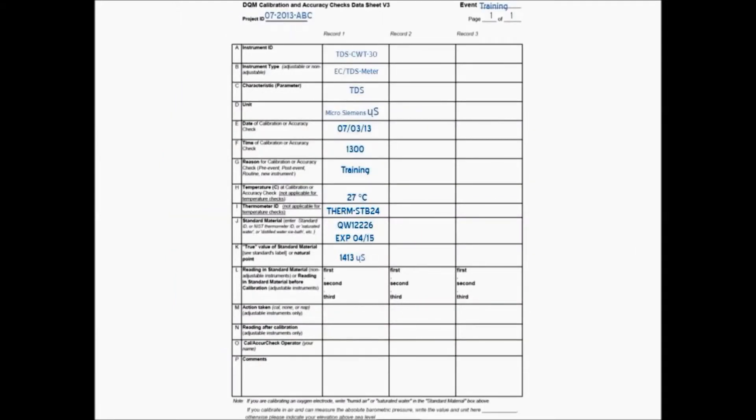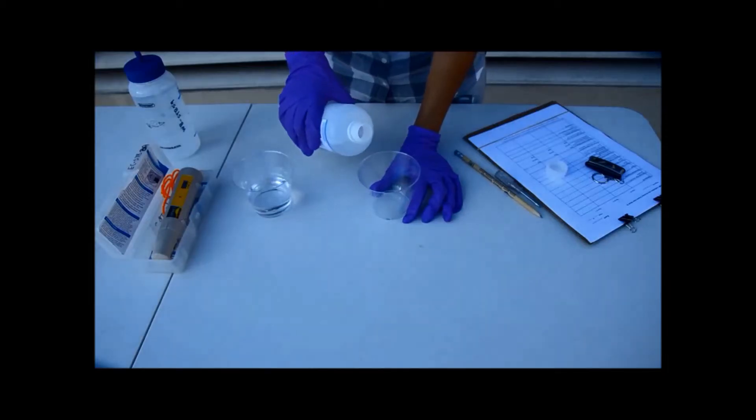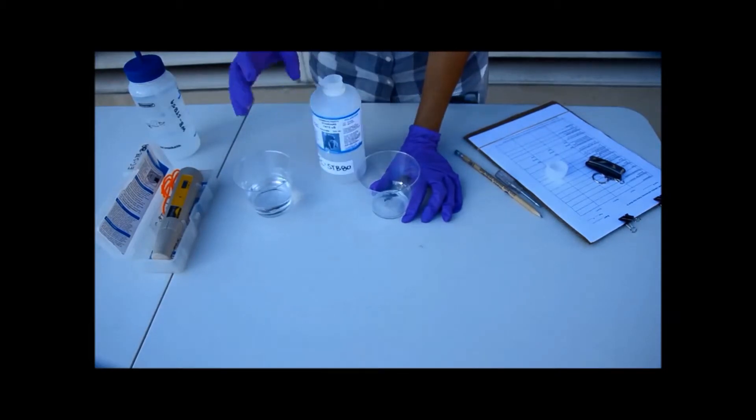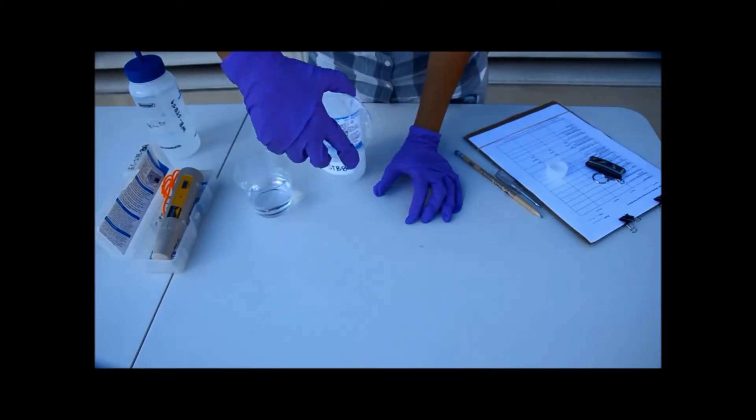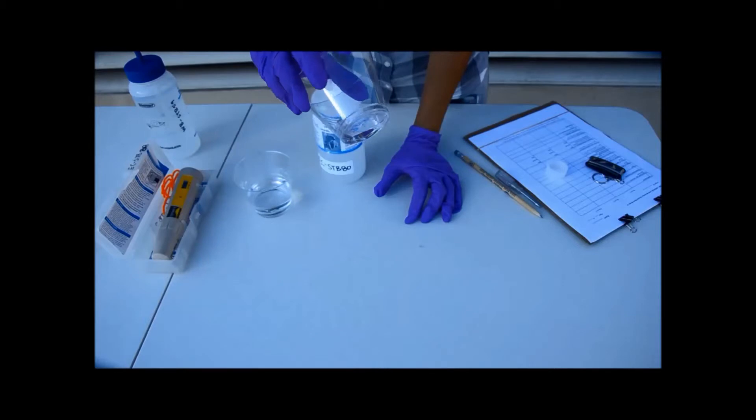Begin by pouring calibration solution into a clean cup. Prepare the cup by pouring some calibration solution into it and swirling it around. Then decant this into your waste container.